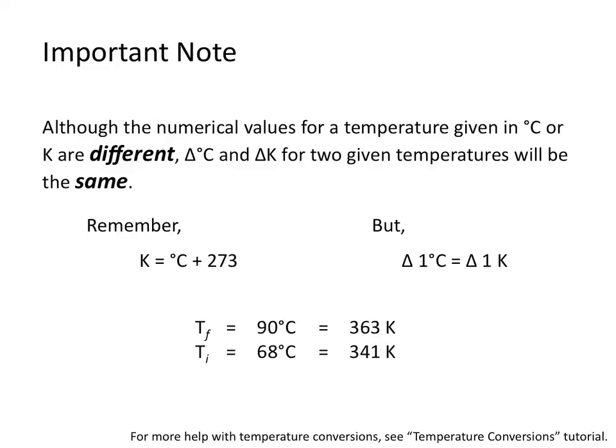If my final temperature was 90 degrees Celsius, that equals 363 Kelvin. My initial temperature of 68 degrees Celsius equals 341 Kelvin. Delta T is 22 degrees Celsius and is also 22 Kelvin. So for problems involving delta T, as long as your values are given in degrees Celsius or Kelvin, you do not need to convert temperatures in order to cancel with your given specific heat value.